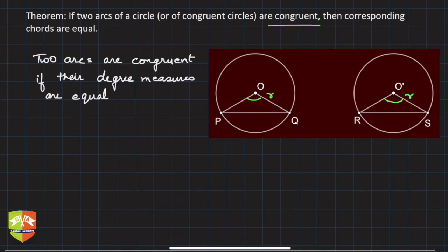If angle POQ equals angle RO'S and the radius is the same, then arc PQ will be congruent to arc RS. Now these two arcs can be on the same circle as well.